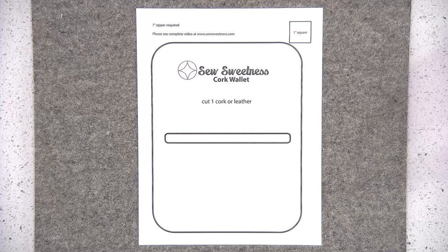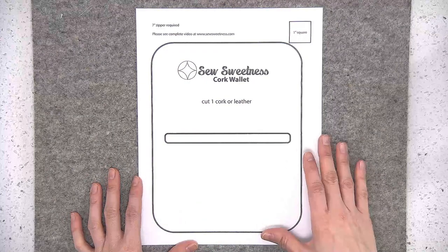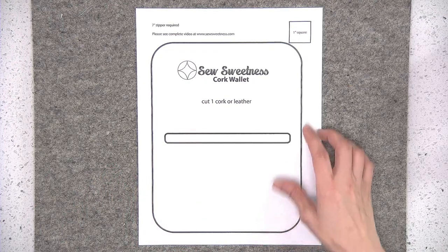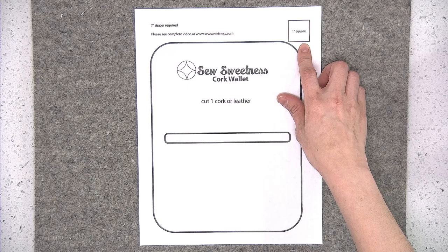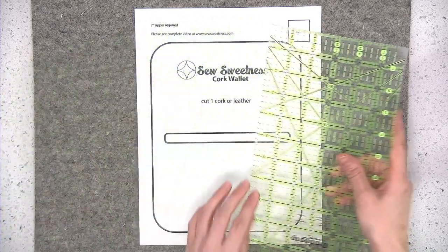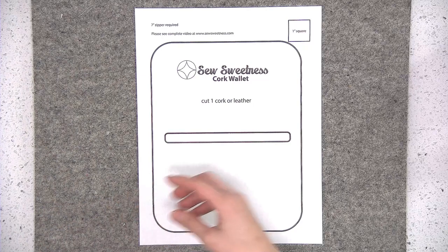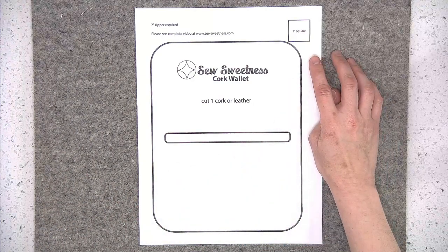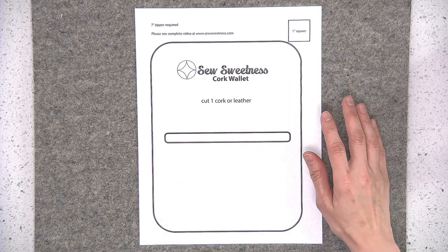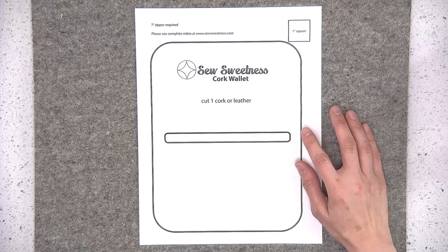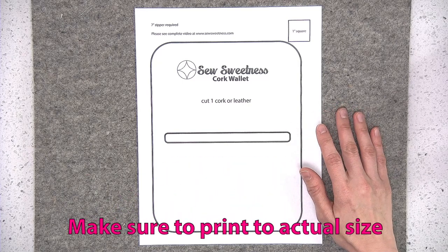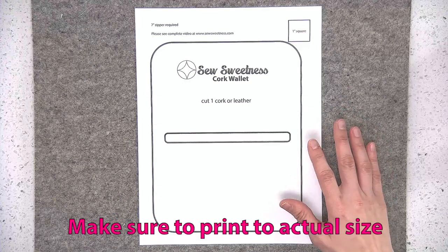Before we begin you'll need to cut out the pattern piece for the wallet and you'll need to measure that 1 inch square on the page to make sure that it measures exactly 1 inch. I always recommend opening up template pages using Adobe Reader and you'll want to print at actual size.